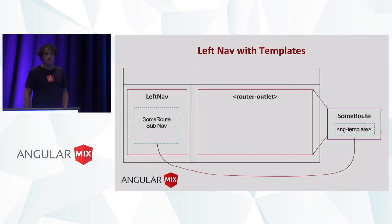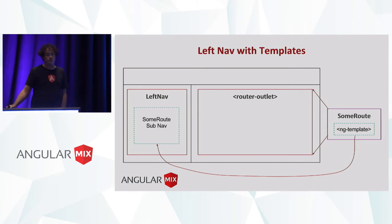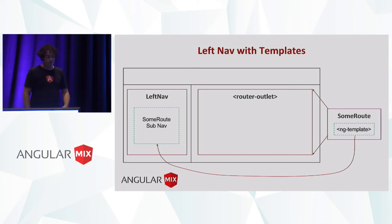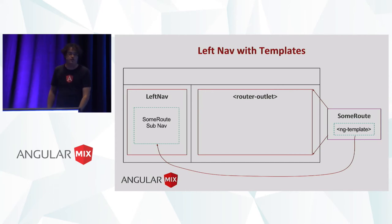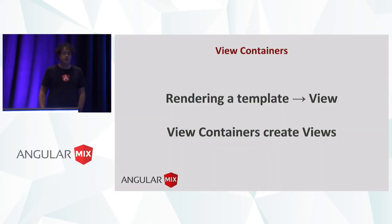So this is what our design is going to look like. We're going to have our routes declare a template, send them via template ref to the LeftNav, and the LeftNav will render it. We have half the picture — we've talked about how to get the reference. Now we need to know how to render it.